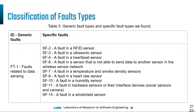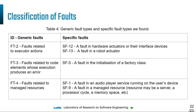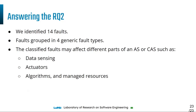Regarding the classification of fault types, here is a table of the types of faults we found. We found four generic fault types, and the specific fault types were grouped within them: faults related to data sensing, faults related to executor actions, faults related to code elements whose execution produces an error, and faults related to managed resources. We identified 14 faults grouped in four generic fault types. The classified faults may affect different parts of an adaptive or context-aware system, such as data sensing, actuators, algorithms, and managed resources.